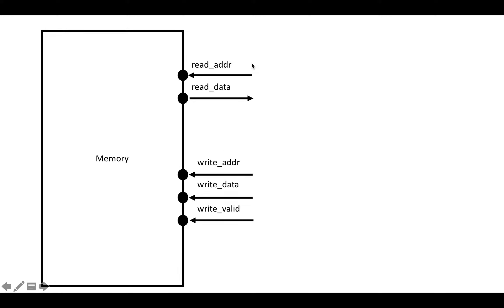To do a read, we send in a read address — we set the read address to be the address we want to read — and some fixed number of cycles later the read data comes out. When we want to do a write, we set the write valid bit to one, and at the same cycle we set the write address and write data. A few cycles later the write is committed and the values in the memory reflect what we set.